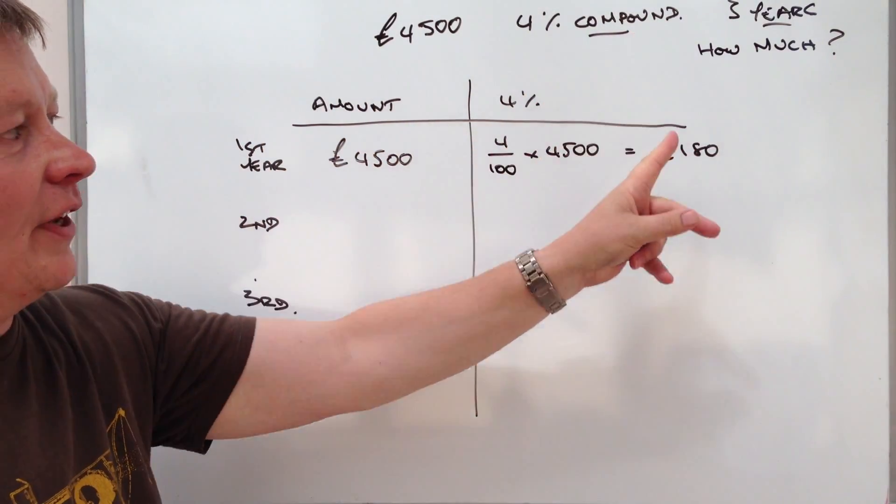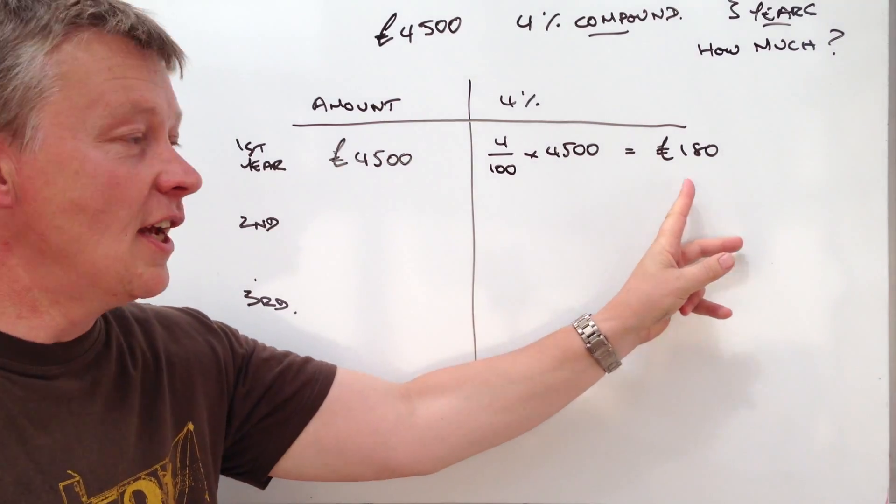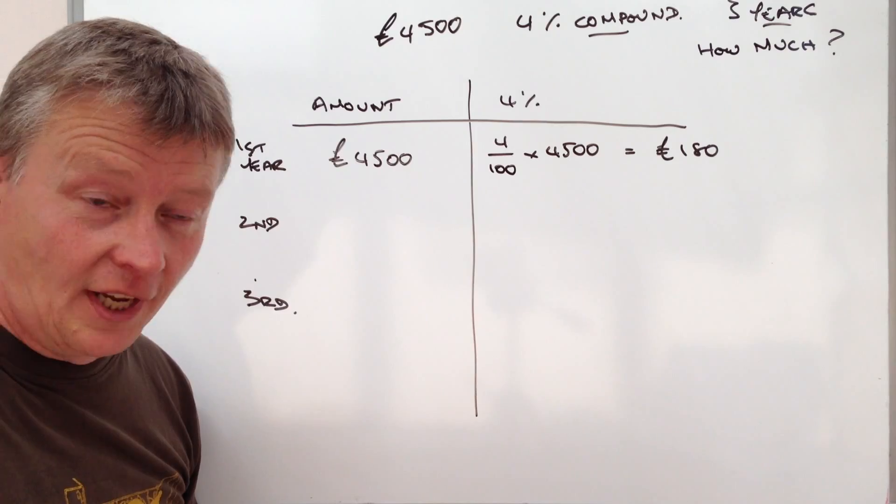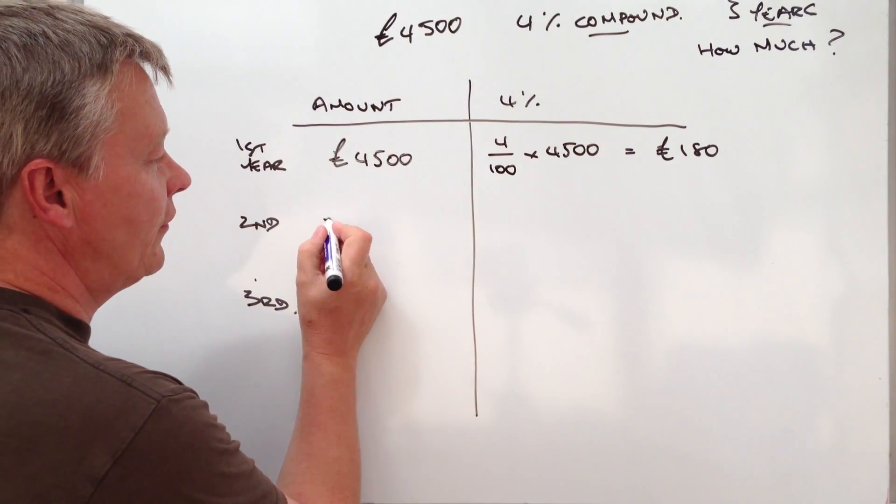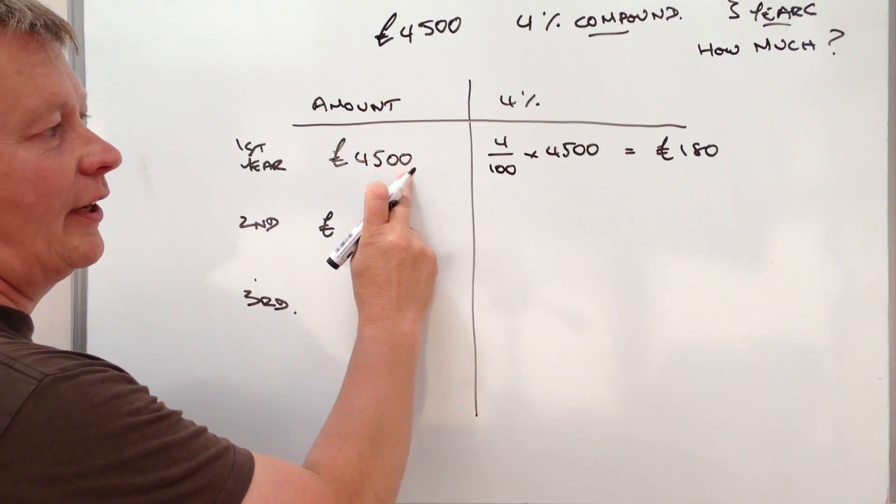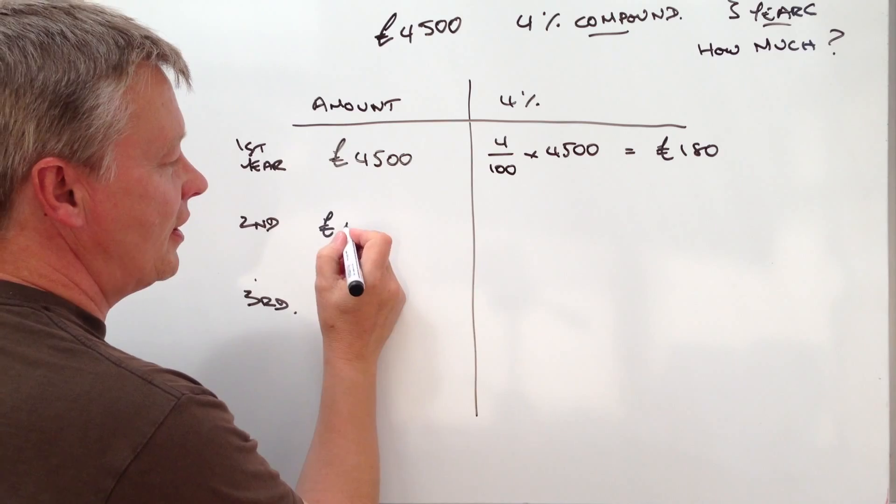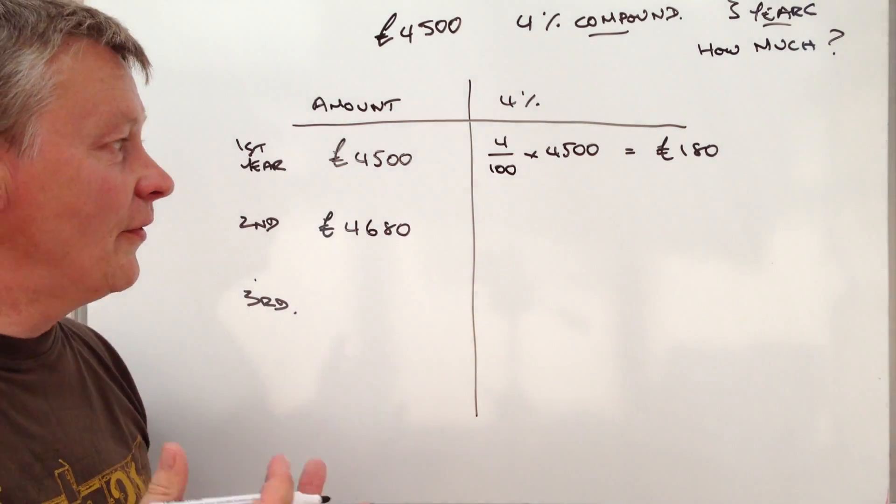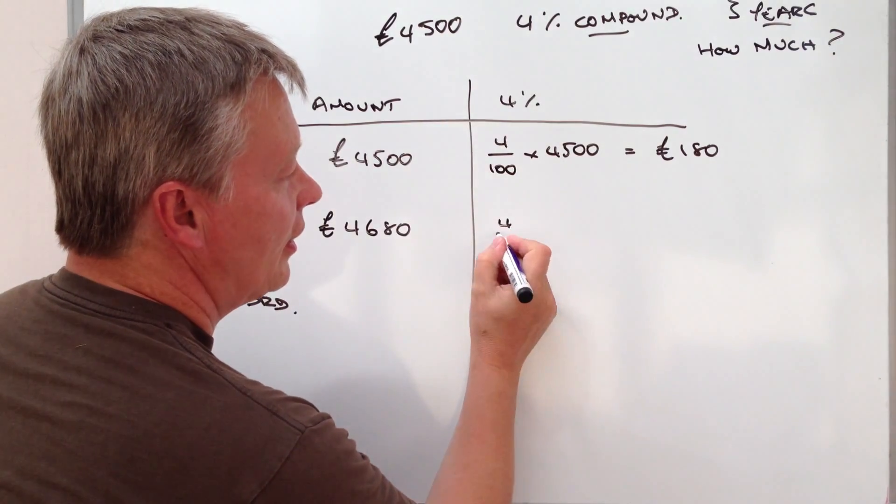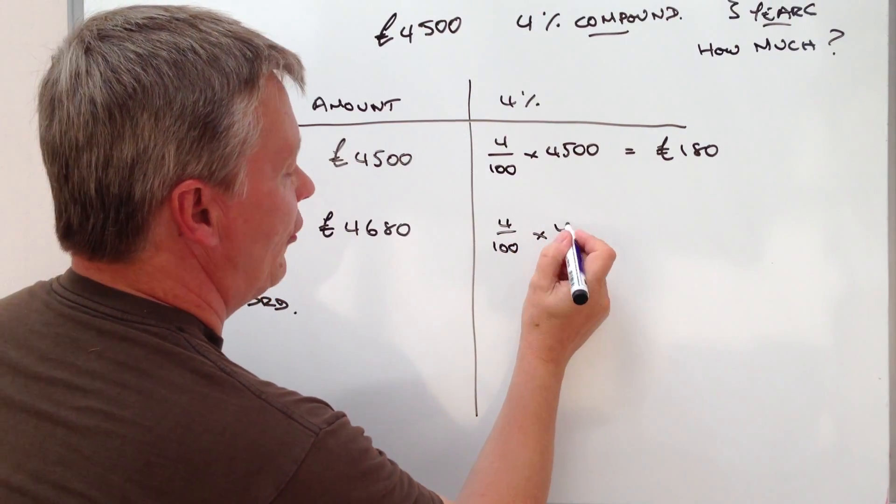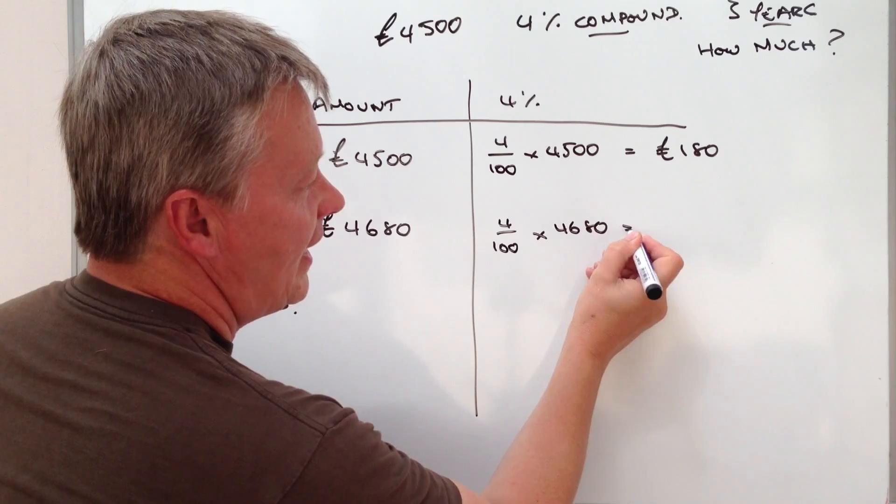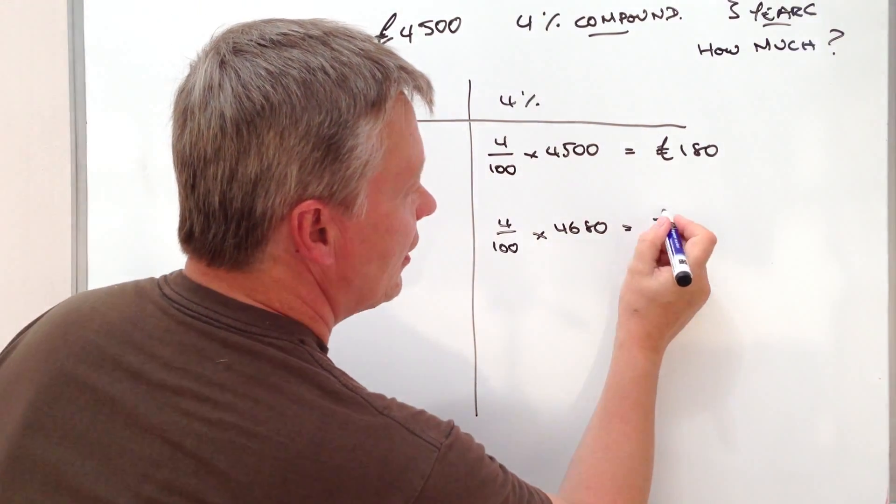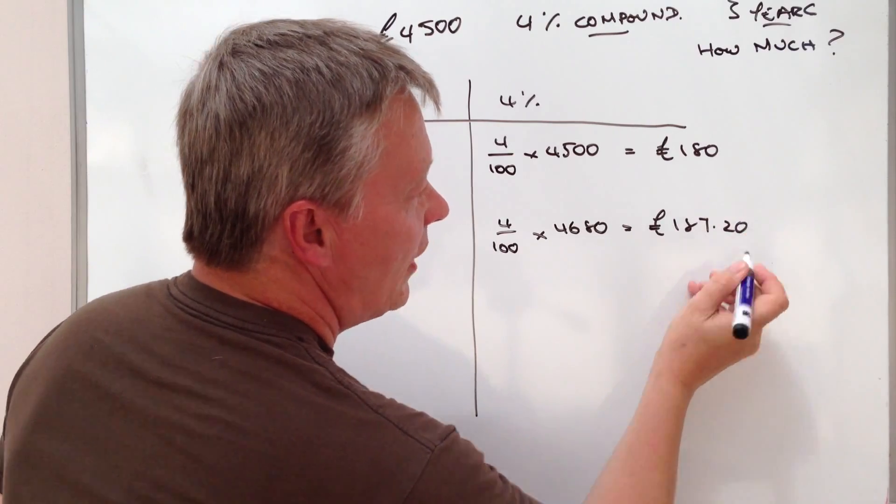So because it's compound that £180 is now joined to this initial capital. So in the second year we've got £4,500 plus £180 so we've got £4,680 in the account and this time we're going to earn 4% of £4,680 and if you calculate that through that will give you £187.20.